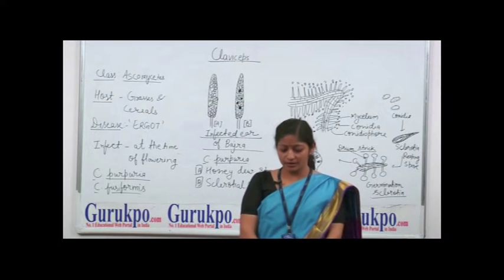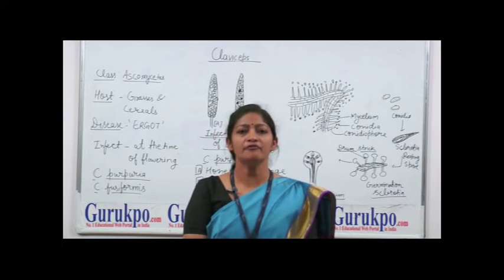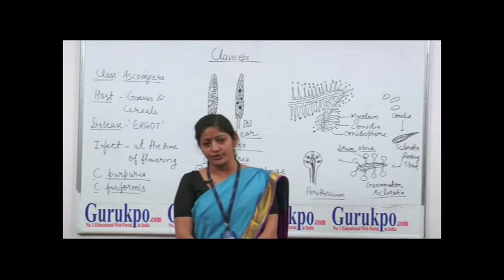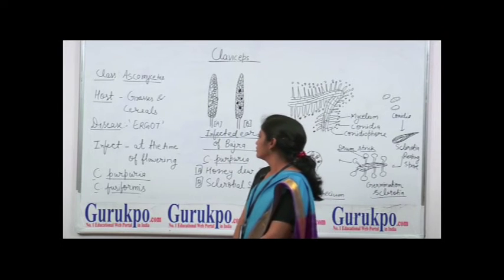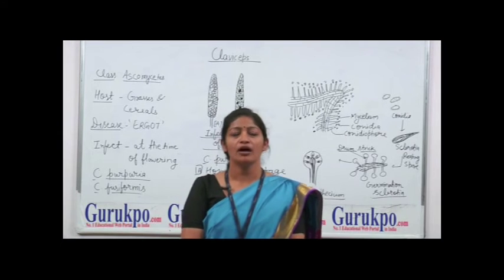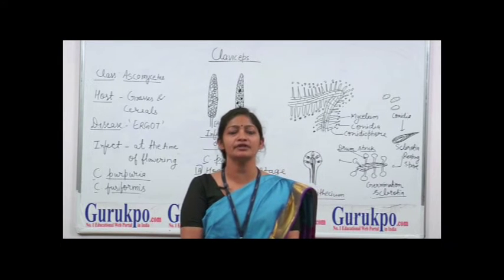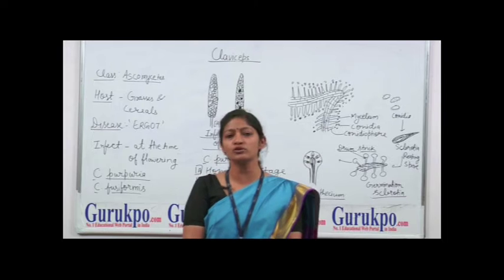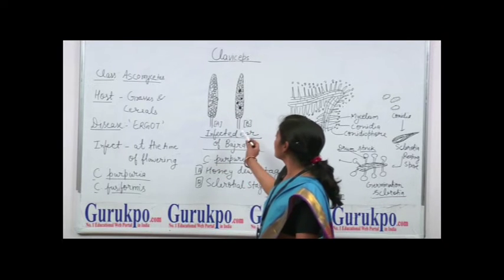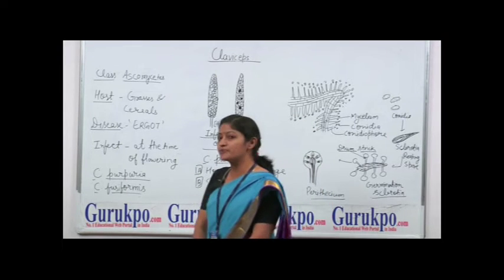At the time of ergot disease infection, this fungus mainly infects the ovary part of the host. In India, 8 species have been reported, out of which Claviceps purpurea and Claviceps fusiformis are most commonly found. This is the infected ear of Bajra in which this fungus Claviceps attacked.